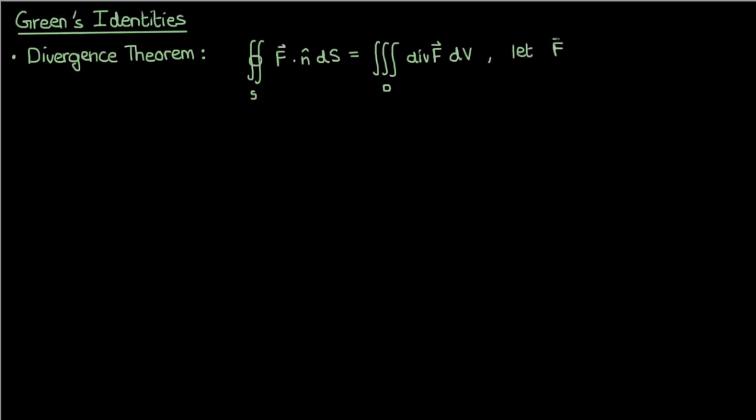Suppose now that I let the vector field capital F equal some function v times the gradient of u. The gradient of u is a vector, but v is a scalar, so a scalar times a vector would give you a vector field F. We can plug in v del u into the divergence theorem, and here's what we'll end up with.